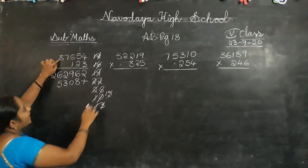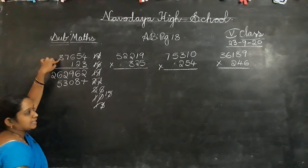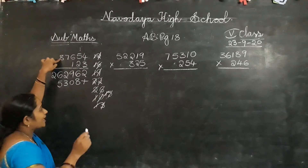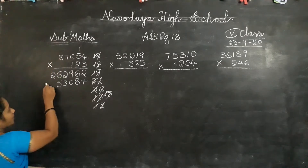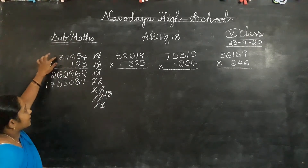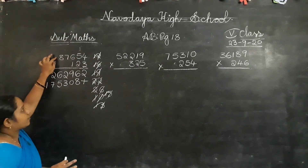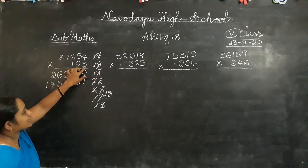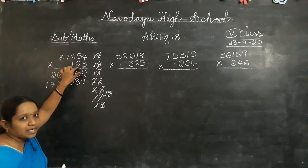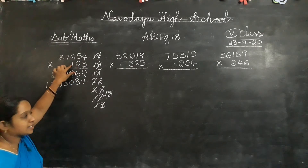Next. 2 eights are 16. 16 plus 1? 17. So write both numbers in the answer place, because there is no number to add there. So the 10's place digit multiplication is over. Next: 100's place digit. Don't write under the 1's and 10's place digit.